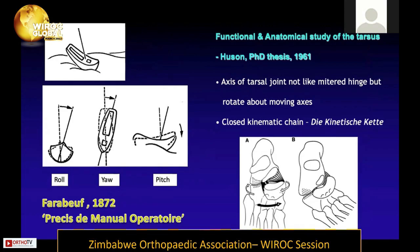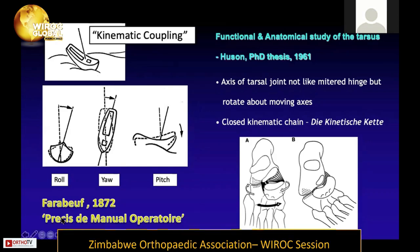To understand why the Ponseti method works, we need to go back before Ponseti. He attributed his understanding of the foot to two important people from France: Farabeuf, who described the movement of the calcaneus like a boat in the ocean — rolling, yawing, and pitching — as the foot moves from adduction into abduction; and Huson, who described the axis of the tarsal joints rotating around a moving axis as a closed kinematic chain.